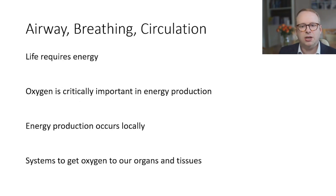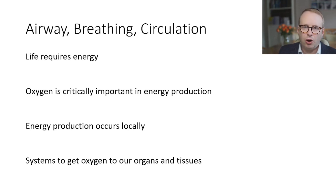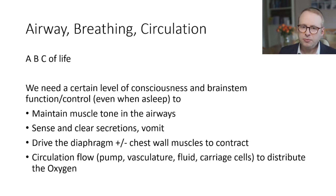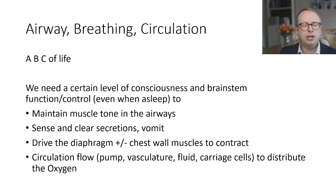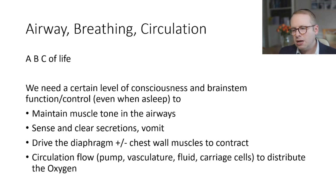Let's start from the most fundamental basics. Life requires energy, and oxygen is critically important in that energy production. Energy production occurs locally in the tissues, so we need systems to get oxygen from the environment down into our tissues. For that we have our airway, our breathing, and our circulation, which make the ABC of life. We need circulatory flow involving our pump — the heart — the vasculature which is the piping, fluids, and carriage cells within the blood to distribute the oxygen to where it needs to go.